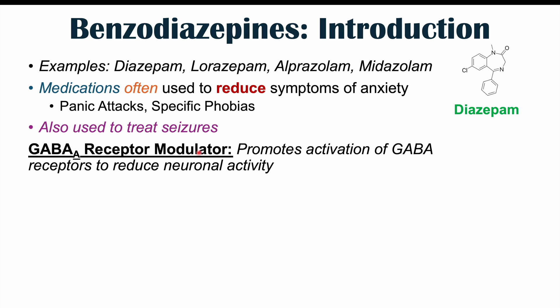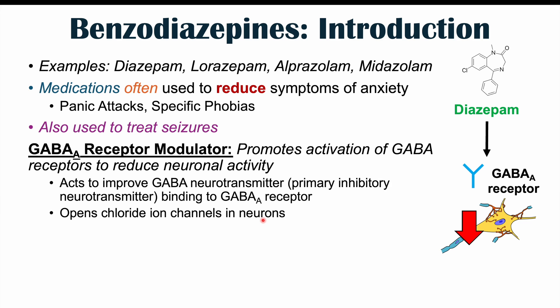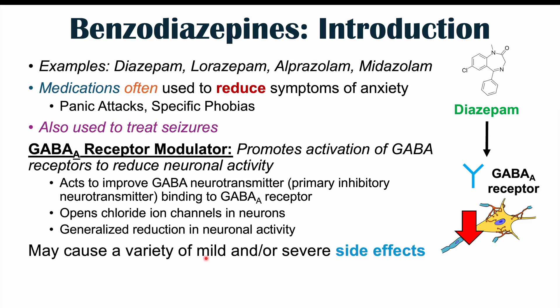Benzodiazepines are GABA-A receptor modulators. GABA-A is the receptor for GABA, which is the primary inhibitory neurotransmitter in the central nervous system. Benzodiazepines promote the activation of these GABA receptors to reduce neuronal activity by increasing the frequency of opening of chloride ion channels in neurons, leading to a generalized reduction in neuronal activity. Due to this ability, they cause a variety of mild and/or severe sedative side effects.